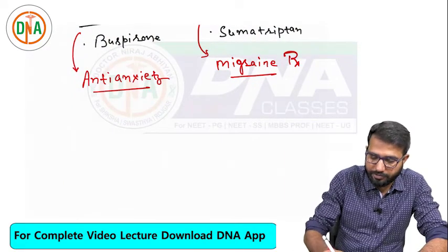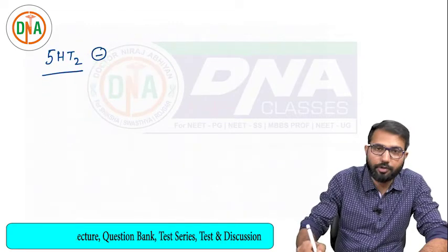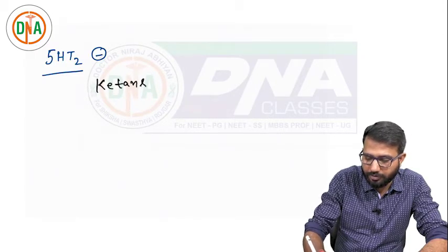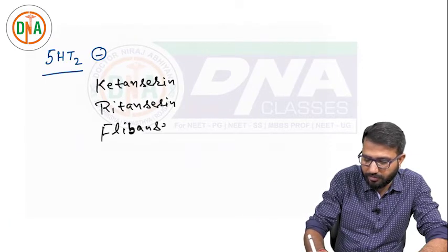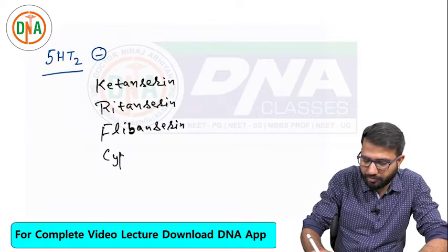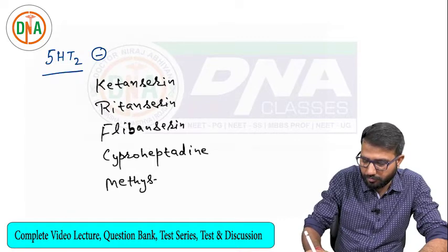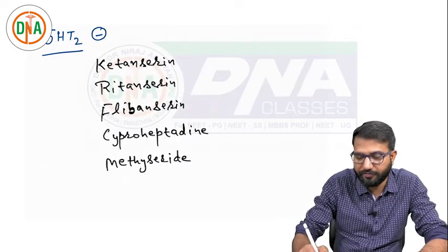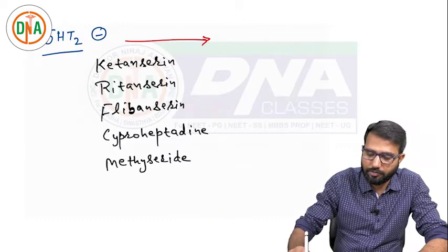Next comes 5-HT2. As mentioned, 5-HT2 drugs are mostly antagonists. The 5-HT2 antagonists include ketanserin, ritanserin, flibanserin, cyproheptadine, and methysergide.